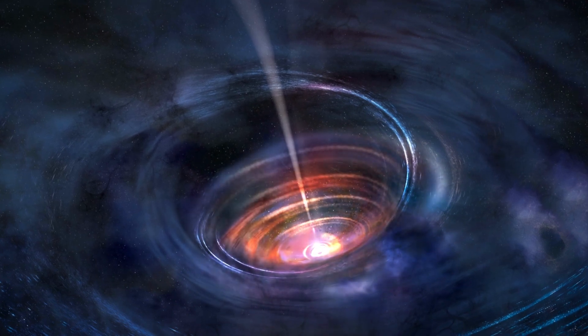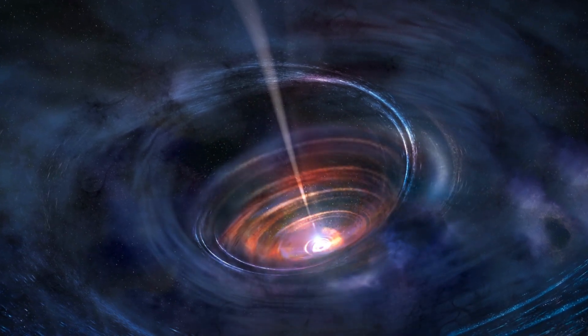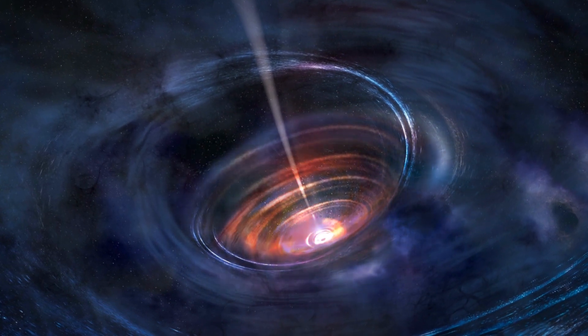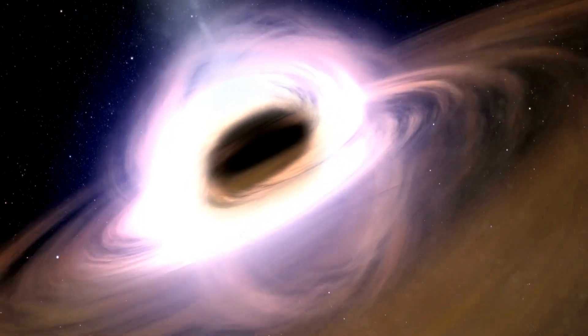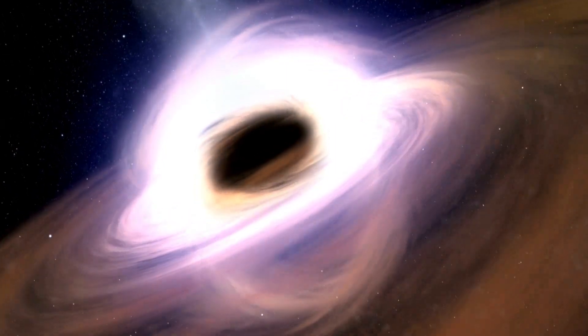Black holes warp space-time in profound ways, creating cosmic phenomena such as gravitational lensing, which bends light around them and causes fascinating visual distortions.